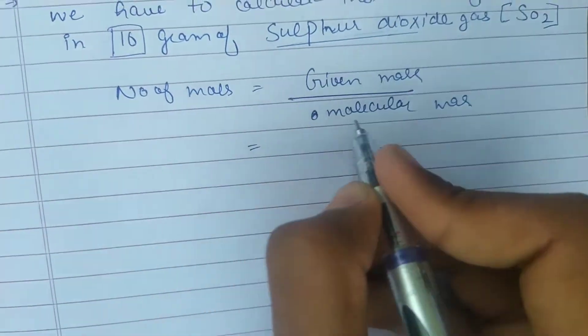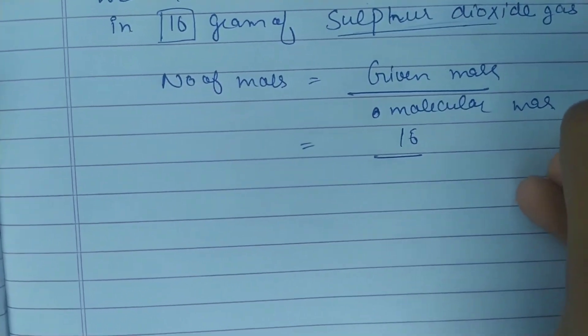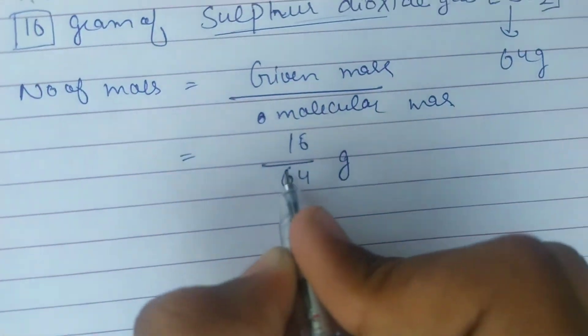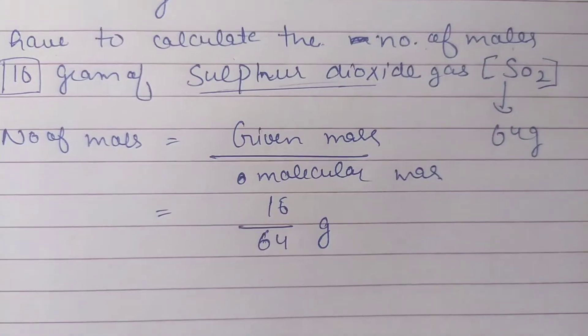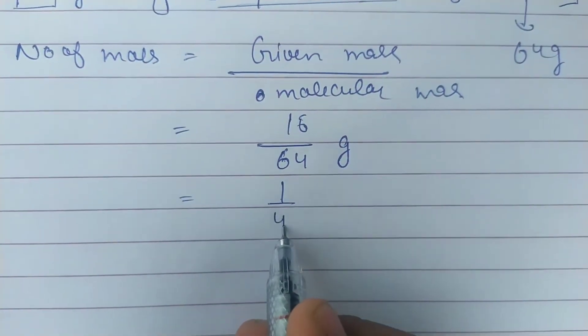Given mass here is 16 and molecular mass is 64. So our answer is 1 upon 4 mole.